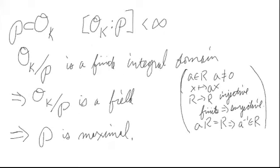Welcome to a lesson with Dr. Powell. We're going to look at a proof for why the ring of integers of a number field has unique factorization of ideals into prime ideals. We're going to discuss some characteristics — properties — of rings of integers which will make this possible. These properties amount to saying that the ring of integers is a Dedekind domain. So let's look at these properties.